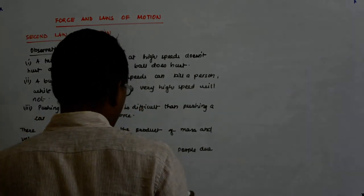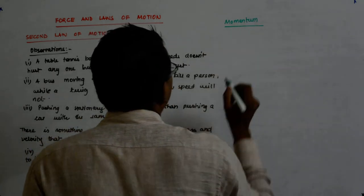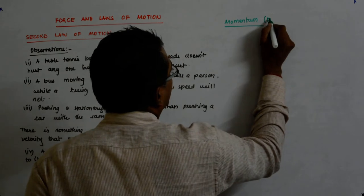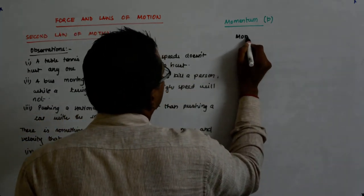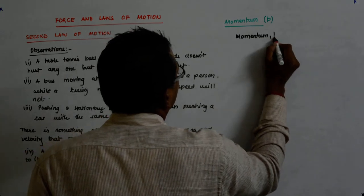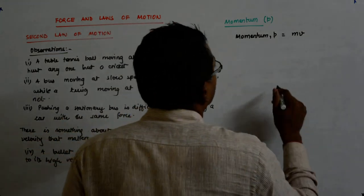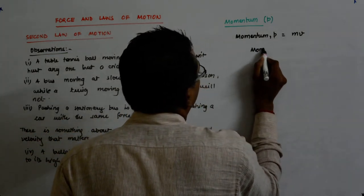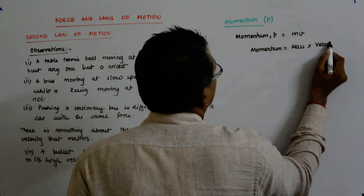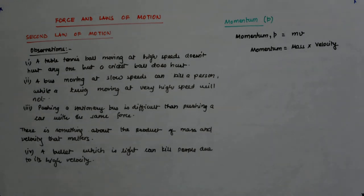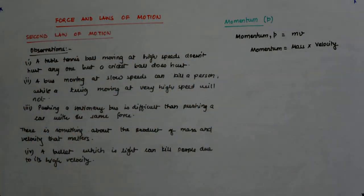Newton defined a term called momentum. What is momentum? Momentum is denoted by small p and is defined as p equals m into v, that is mass into velocity. So momentum is mass into velocity.